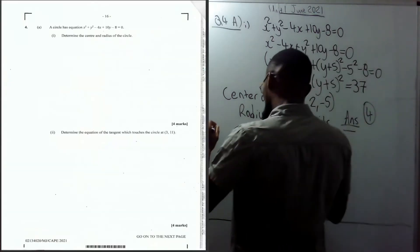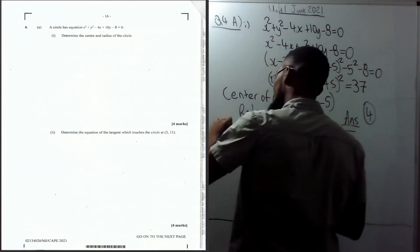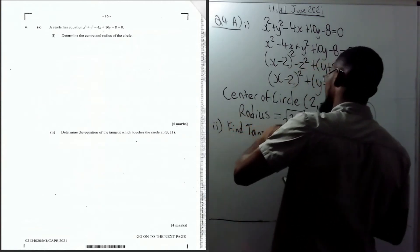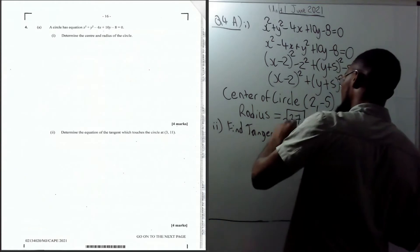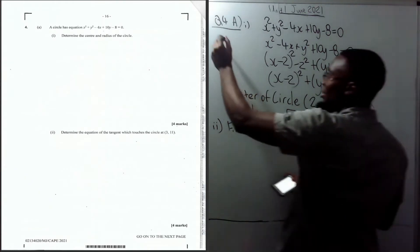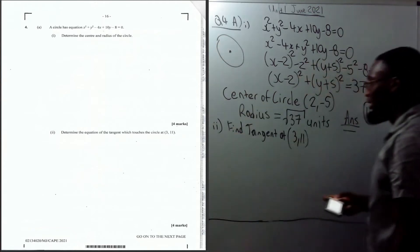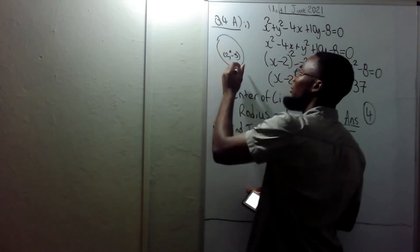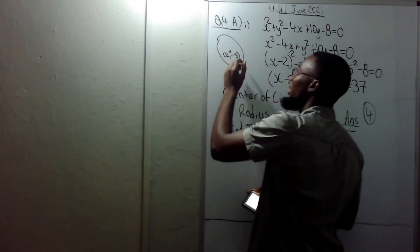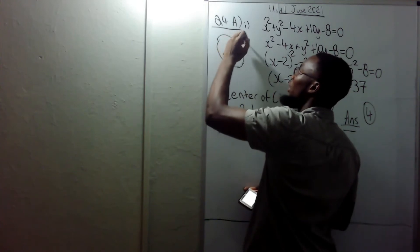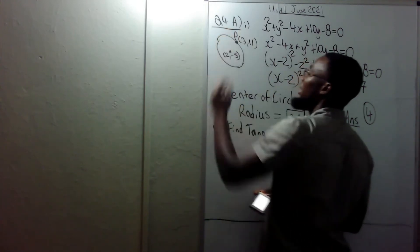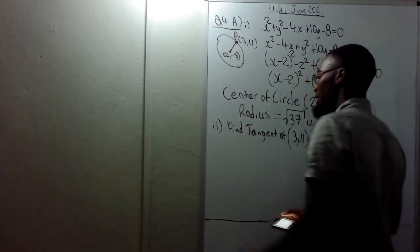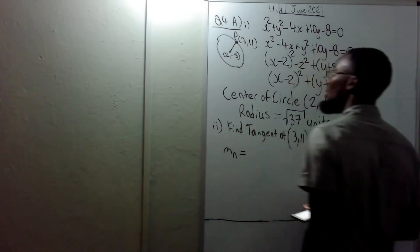The next part, part two, says find the tangent at (3, 11). I like to draw the circle and look at it. If the center is (2, −5), then the point (3, 11) would be somewhere up here — let's call it P. First, I need to find the normal at P, so the gradient of the normal is equal to y2 (which is 11) minus y1 (which is −5) over x2 minus x1.